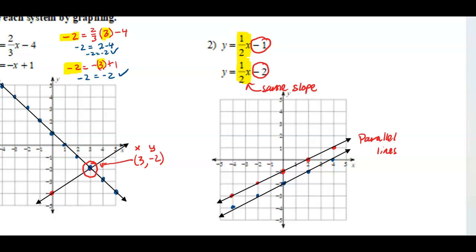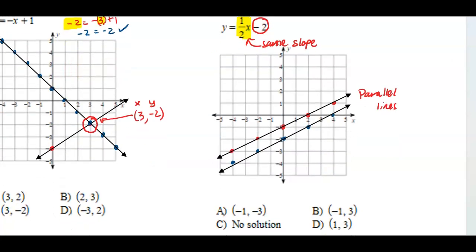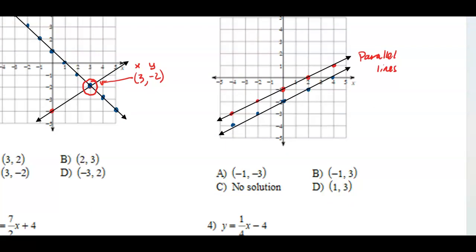So because these two lines never intersect, we have no solution, meaning there is no point that is a solution for both equations. We have many points for each equation, but none that works for both equations.